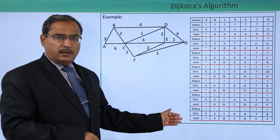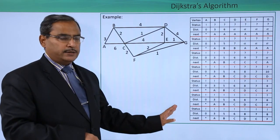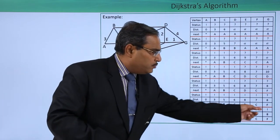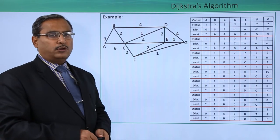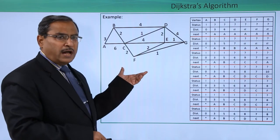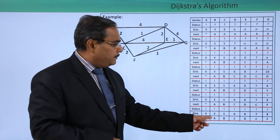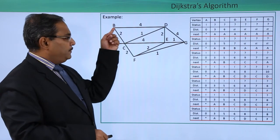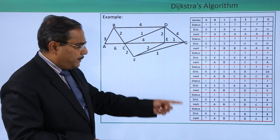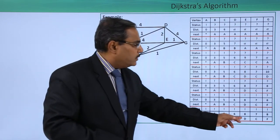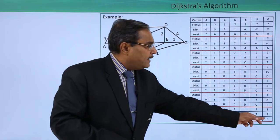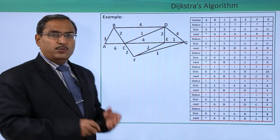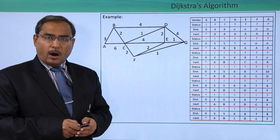The full process has been shown. You can pause the video and verify the calculations. We stop when all status values are '!', meaning all nodes have been considered. The path can be obtained by tracing: A to B, B to C, C to D, D to E, C to F, F to G — giving all-pair shortest paths, which can also be used to construct a routing table.